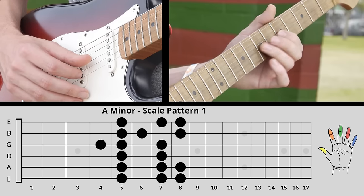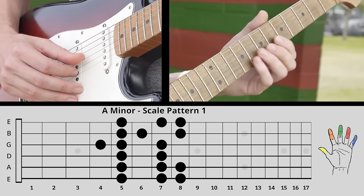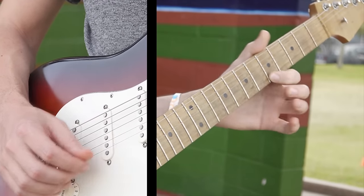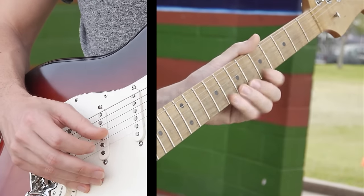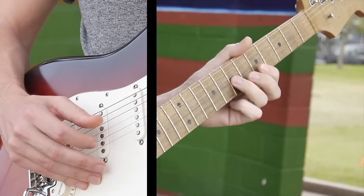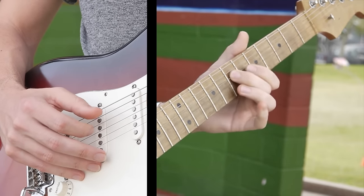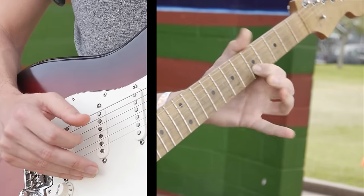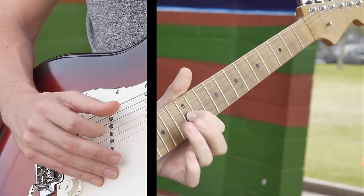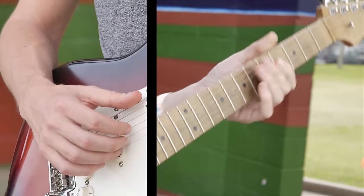He does this other cool thing where he goes... little chromatic walk down. Just walking down there, you know, and then they just riff. So really anywhere in the A minor natural A minor scale is going to work great for that.